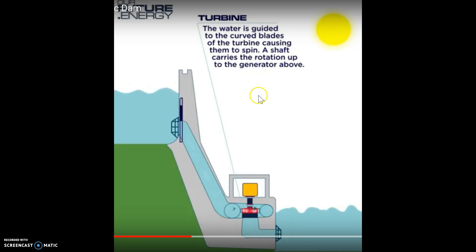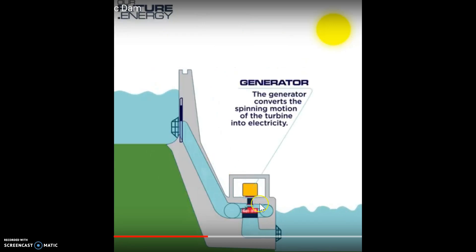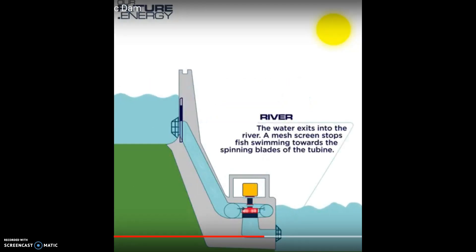So that rushing water hits against the blades of the turbine, causing the blades to turn, and that produces electricity in the generator or the dynamo. When the water passes through, it usually exits into a river or some lower reservoir.